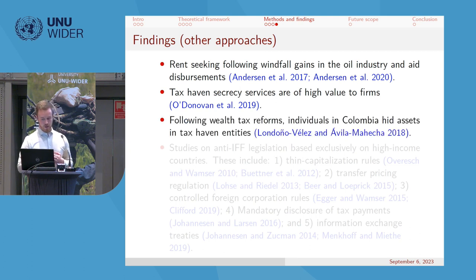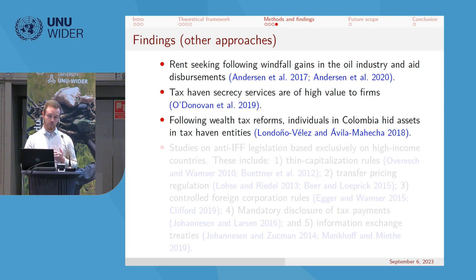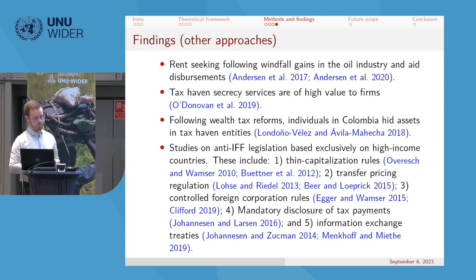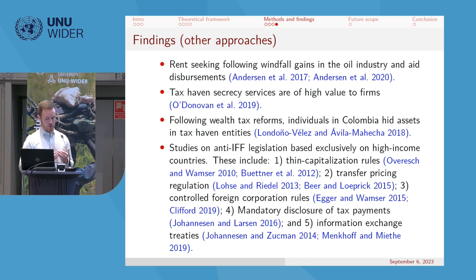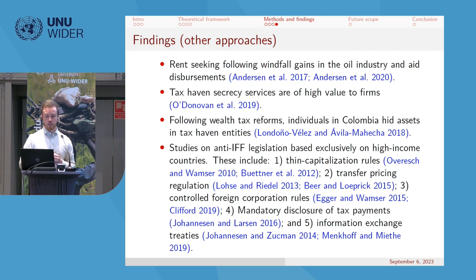Also using the Panama Papers, Londoño-Vélez and Ávila-Mahecha find that at the time of a wealth tax reform in Colombia, money was flowing out to tax havens. There are also studies on anti-IFF legislation, but the problem is they are almost entirely based on high-income country data — very few examine the effects in developing countries.